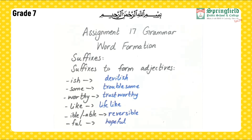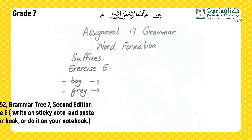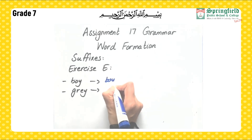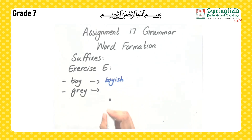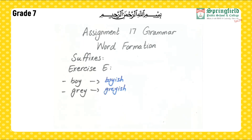Now we will move towards the next exercise: use appropriate suffixes from the table above to form adjectives. The table is given in your books as well as in your assignments. The first example is boy — we can make boyish, meaning boy-like. Gray becomes grayish, resembling the gray color. That's the end of part one. I'll see you in part two. Take care. Allah Hafiz.